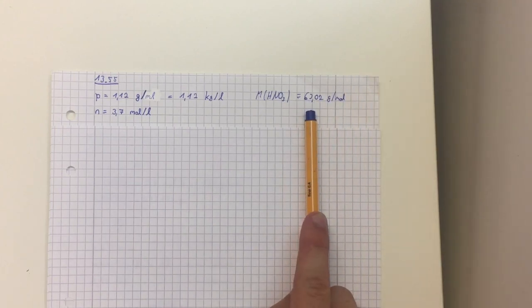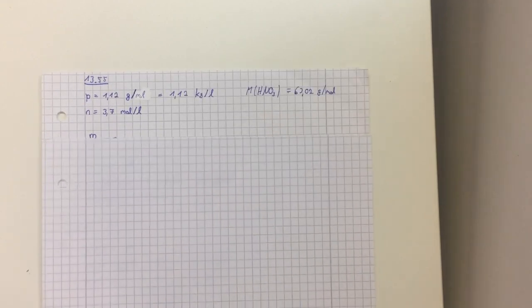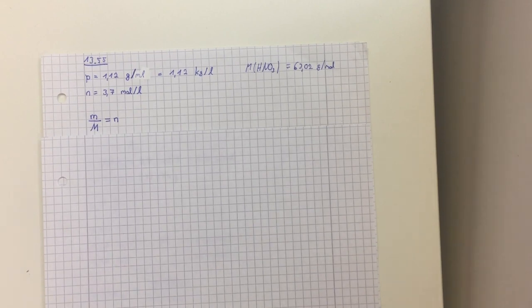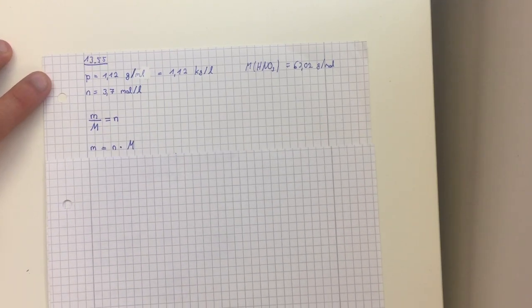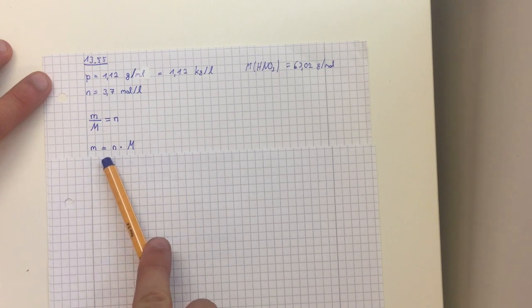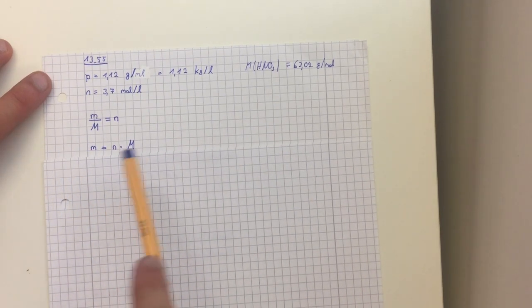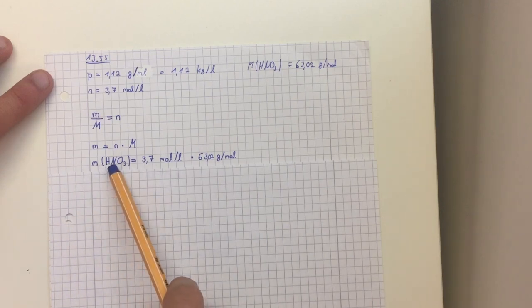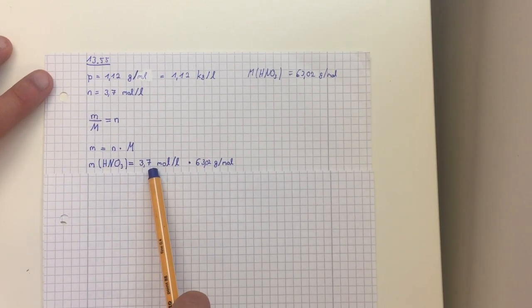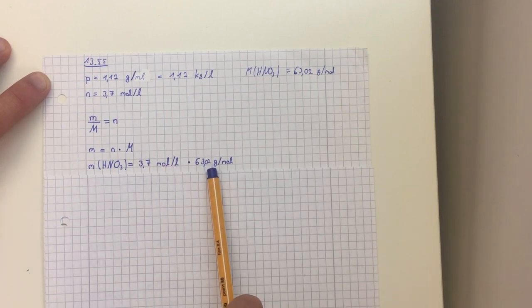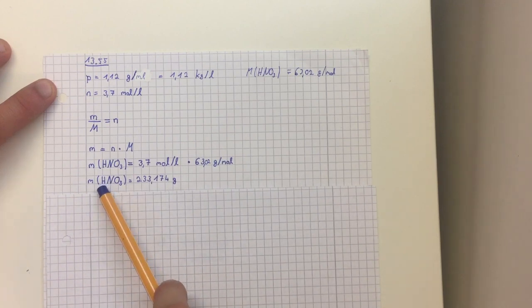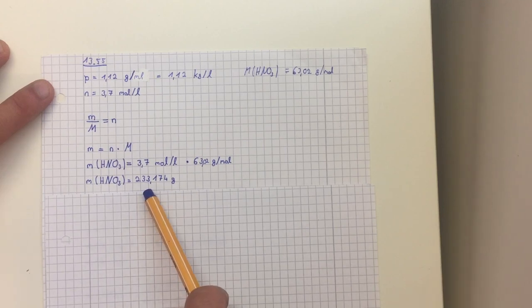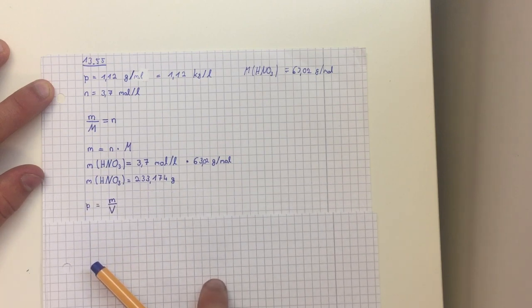First we take the formula for molarity. If we adjust the formula, we get the mass of HNO3 equals the multiplication of the molarity and the molar mass. We have the molarity at 3.7 moles per liter and the molar mass of HNO3, and then we get the mass of HNO3 which is 233.174 grams.